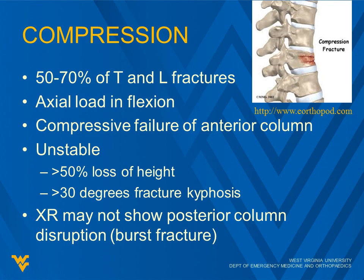Compression fractures make up 50 to 70% of thoracic and lumbar fractures — the major one we will see. There's an axial load especially on flexion causing compressive failure of the anterior column. It is considered unstable if there's greater than 50% loss of height or greater than 30 degrees fracture kyphosis. X-rays may not show posterior column disruption, which would then be a burst fracture, so if you think you see a fracture a CT scan is needed.